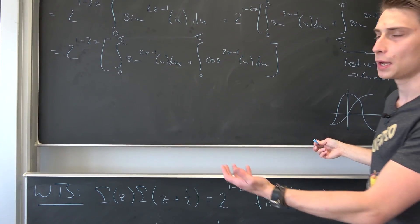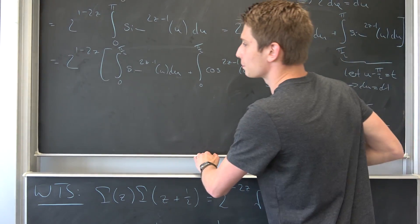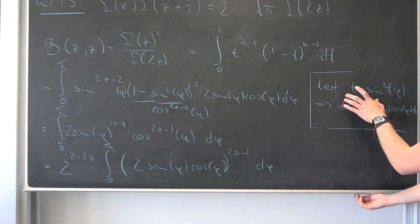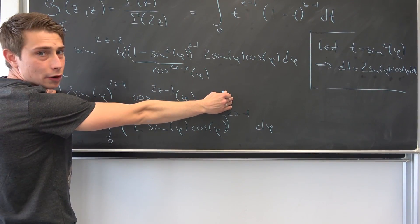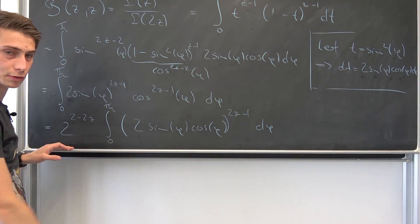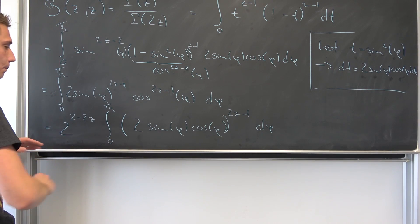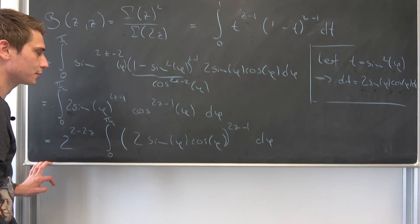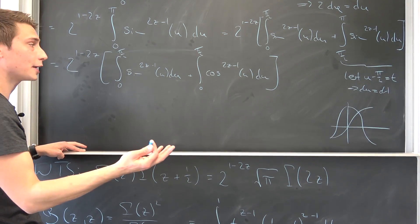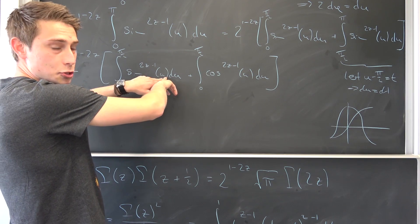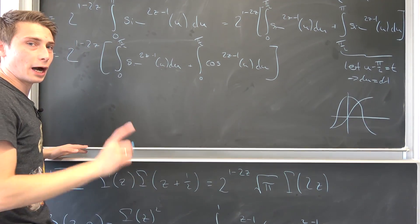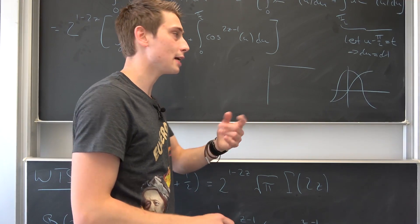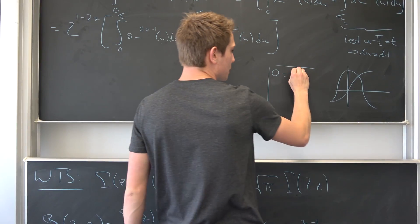We are close to being done. We want to get back to the beta function, and we have introduced the proper substitution before. The other definition of the beta function involves exactly these integrals. We can get to our beta function by recognizing that cosine to the 0 power is 1, and 0 equals 2 times one-half minus 1, so 1 equals 2 times one-half minus 1.